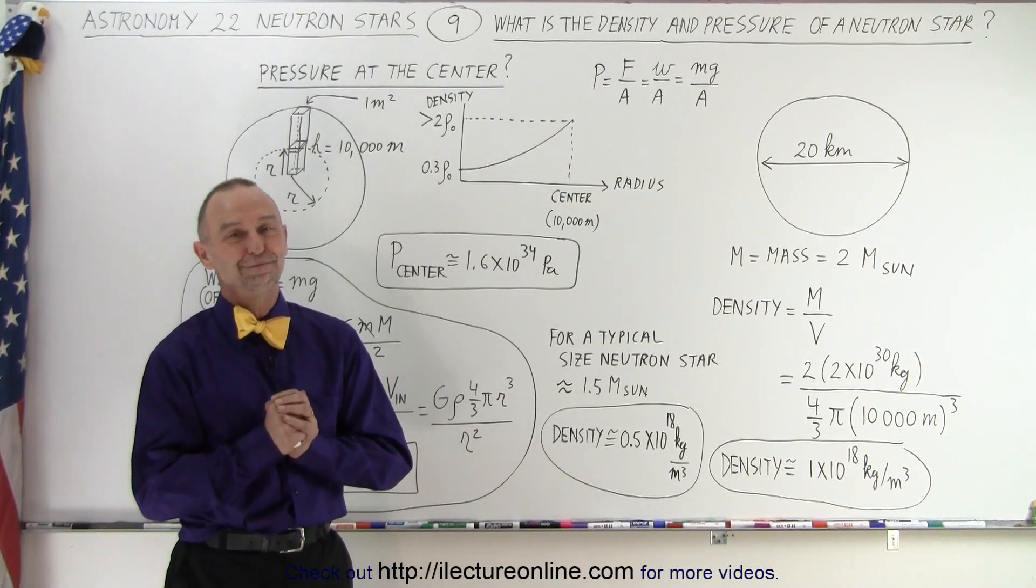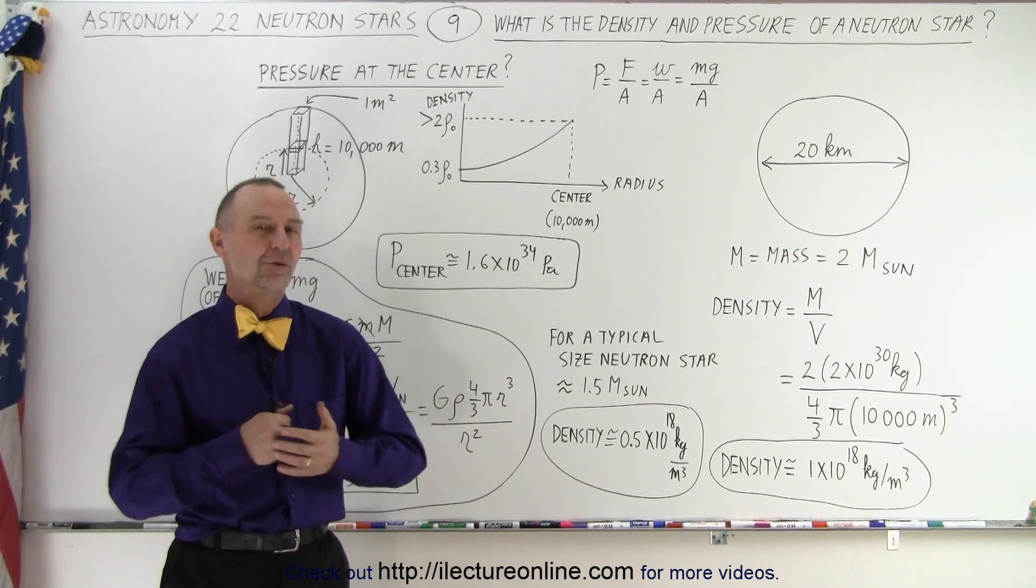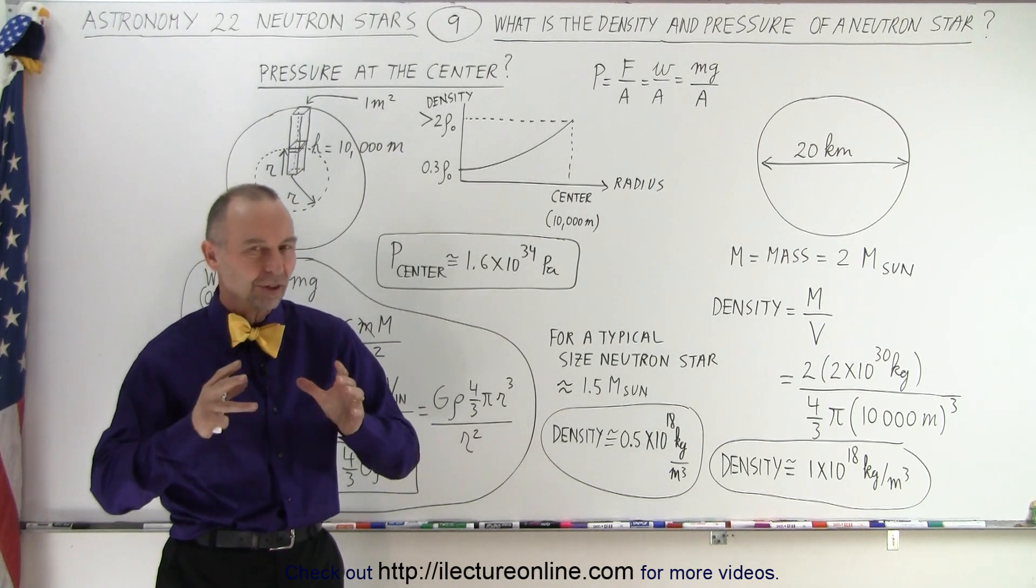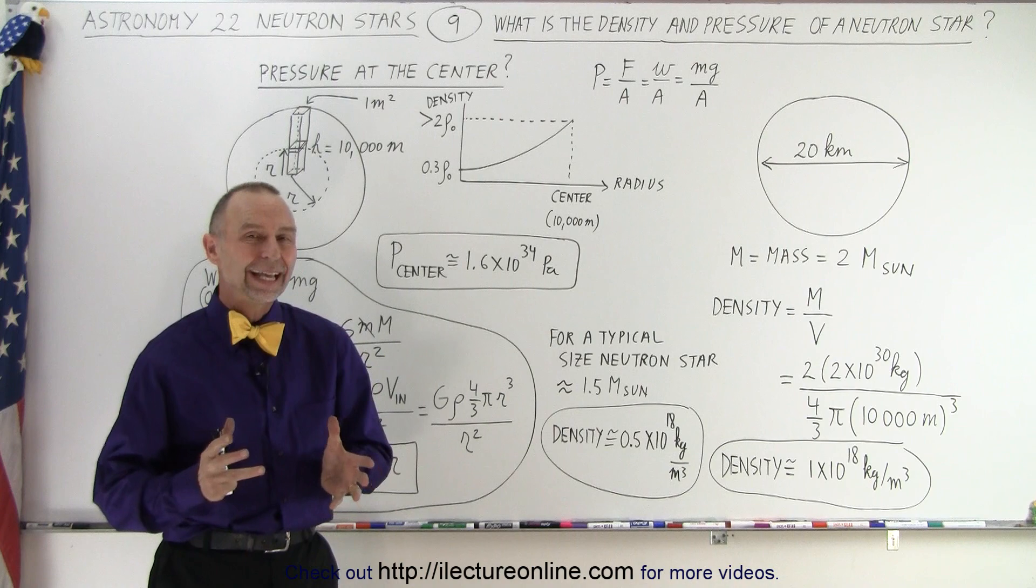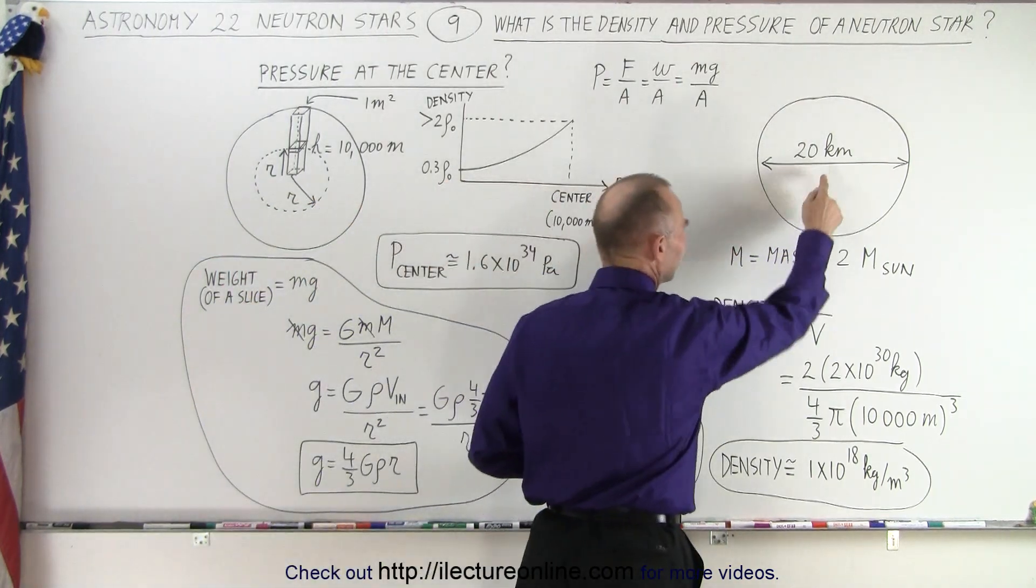Welcome to ElectronLine. So what is the density and pressure of a neutron star? Of course, the density would be for the entire star, and the pressure would be the pressure at the very center of the star.